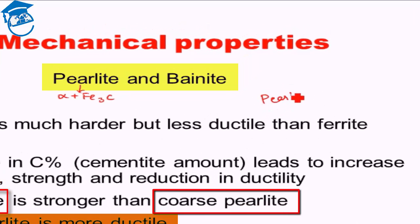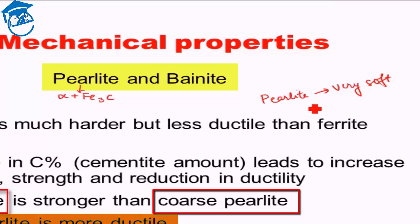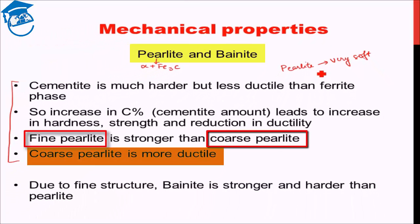Pearlite — the combination of ferrite plus cementite — is a very soft combination of phases; it is the softest amongst pearlite, bainite, and martensite. This pearlitic microstructure is mainly used when we require something which has to be ductile. But in most practical scenarios, pearlitic structure is not of very great importance. We study it in detail because it gives a very good idea about the different processes and transformations taking place, but in practical application pearlite is not really a very important microstructure.